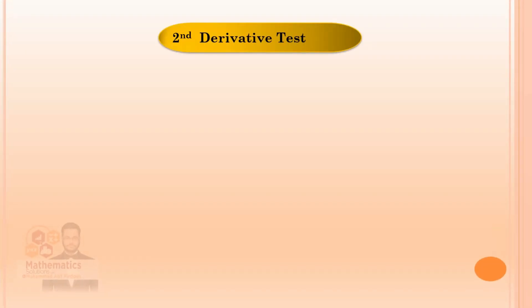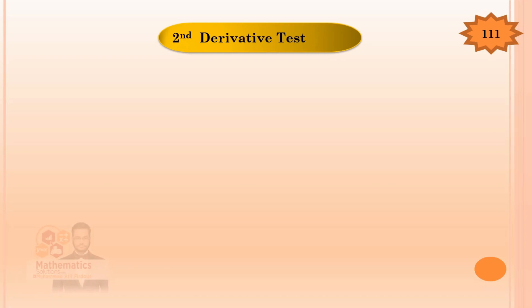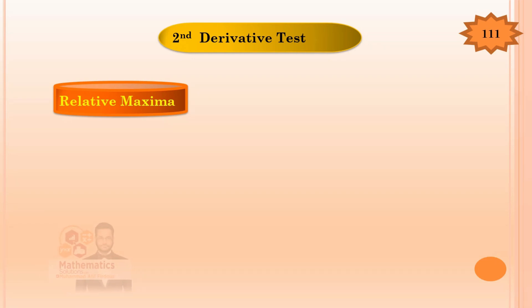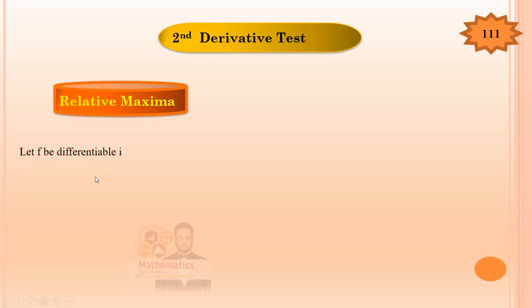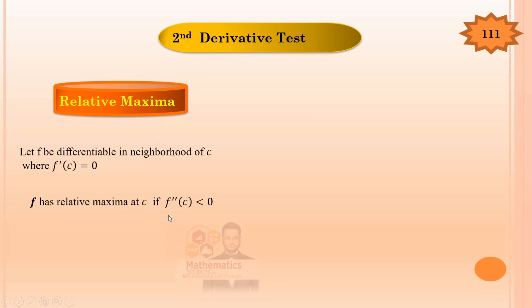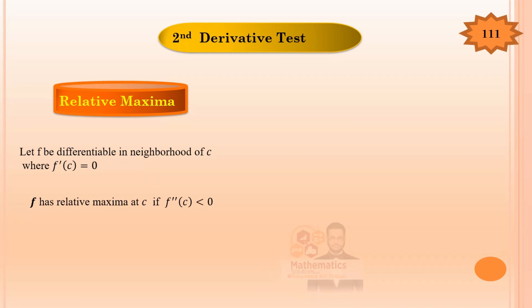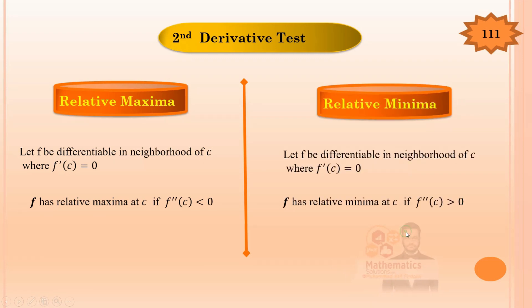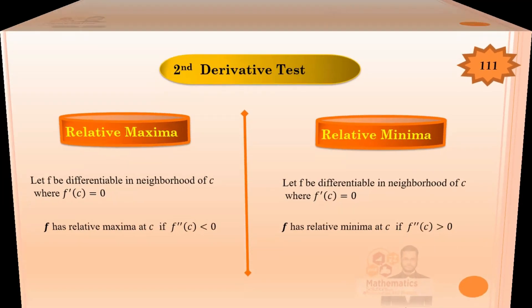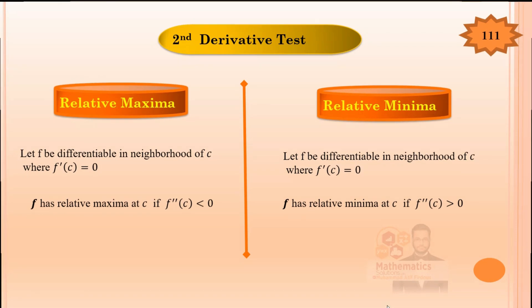Second derivative test for relative extrema: from page 111. If f is twice differentiable and f'(c) = 0, then: if f''(c) < 0, the function has a relative maximum; if f''(c) > 0, the function has a relative minimum. Note this is the opposite of the first derivative test logic — mostly we use the second derivative test in questions.